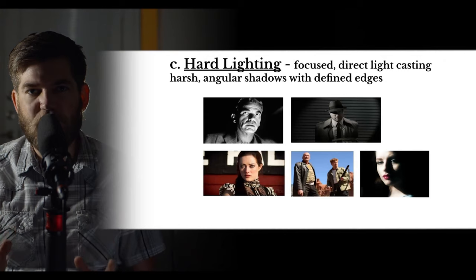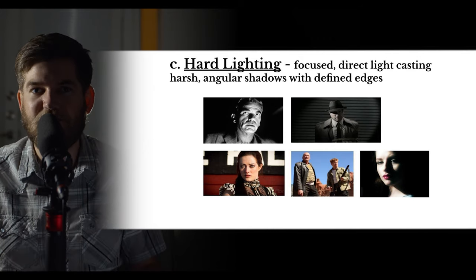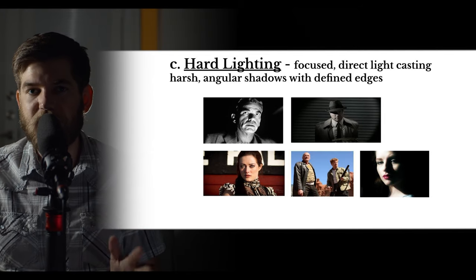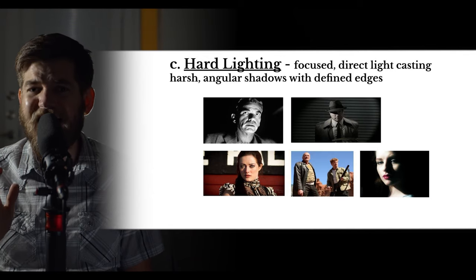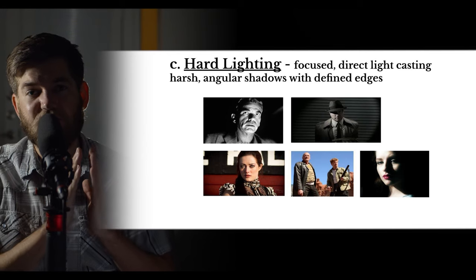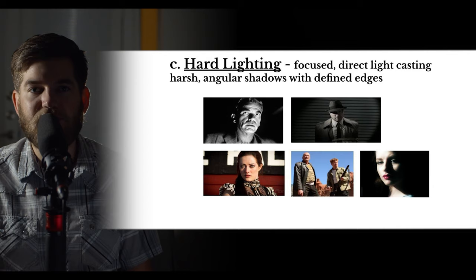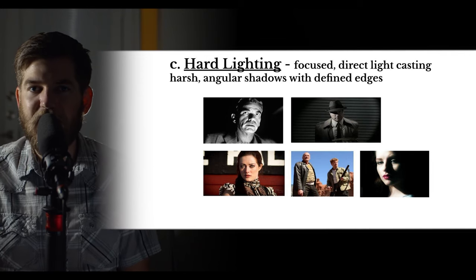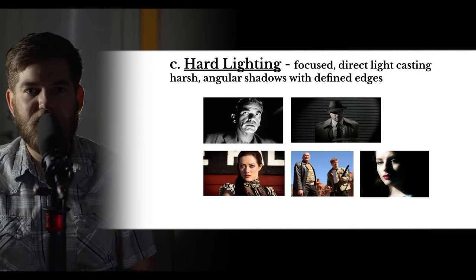Hard lighting is focused, direct light casting harsh angular shadows. The sun creates hard light when there are no clouds, since there's no lampshade in front of it — clouds can diffuse the light, turning hard light into something else. Hard lighting creates harsh angular shadows with very well-defined edges, almost like straight lines you could trace. These hard shadows are created by a harsh, direct light shining close to the subject.